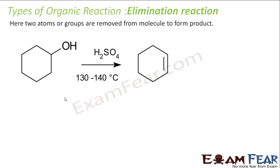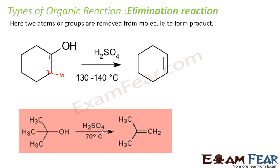For example, in a typical elimination reaction, OH is removed from carbon one and hydrogen is removed from an adjacent carbon, giving a double bond in the presence of sulfuric acid. Similarly, OH is removed from one carbon and one hydrogen is removed from an adjacent carbon to form a double bond in the presence of H2SO4. This is the elimination reaction.